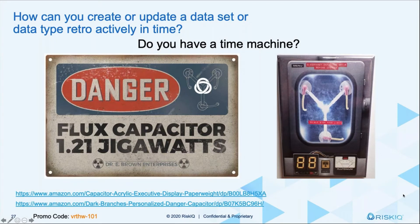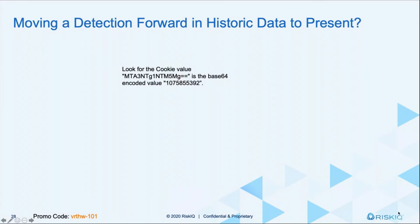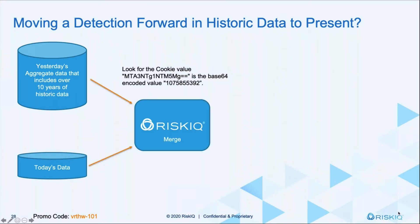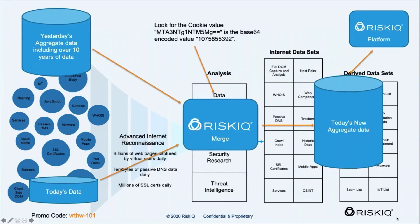You really need to have a time machine to be able to create this stuff, but because we have this rich history, we actually have the ability to do that. If we looked at a particular type of cookie value and it was encrypted, we can take data from yesterday and data collected today and do a merge every day. When we do this merge, we're able to pull that piece of data out or create that new value — those IOCs. That allows us to create a new aggregate that the platform uses. We can go back and roll a data set from the beginning of time we collected to present. No one else can do that.